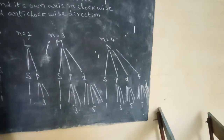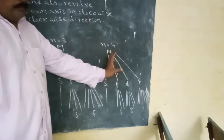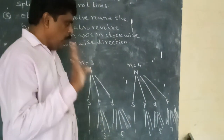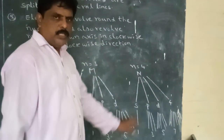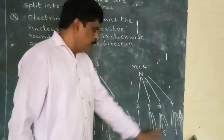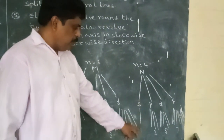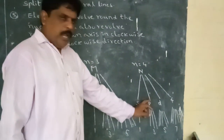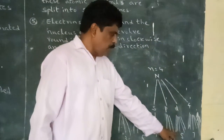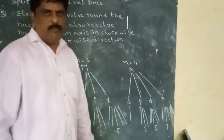N=4 is the N-Shell. N-Shell is divided into 4 atomic orbitals: S, P, D, and F. In the presence of a magnetic field, S is divided into 1 line, P into 3 lines, D into 5 lines, and F into 7 lines.